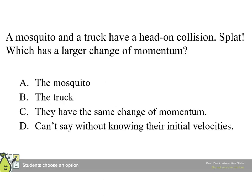A mosquito and a truck have a head-on collision, splat, which has a larger change in momentum. But this is, as always, sort of a trick question here. They have the same change in momentum because, in the collision, they exert forces on each other. But those are internal to the system of mosquito plus truck. Now, of course, the mass of the mosquito is very small. So, the acceleration that the mosquito suffers is huge, which is why it goes splat. And the truck hardly notices because its mass is giant. But they have the same change in momentum.